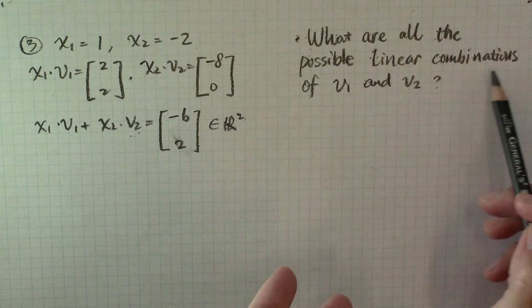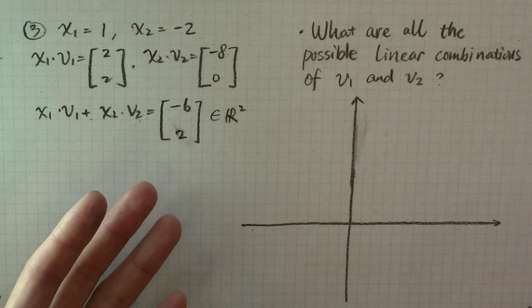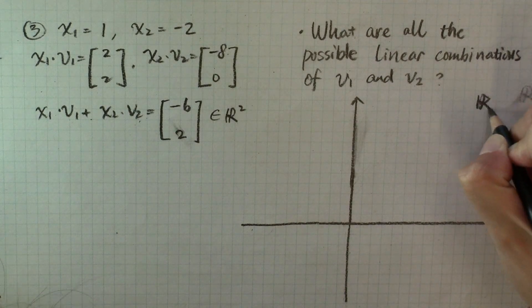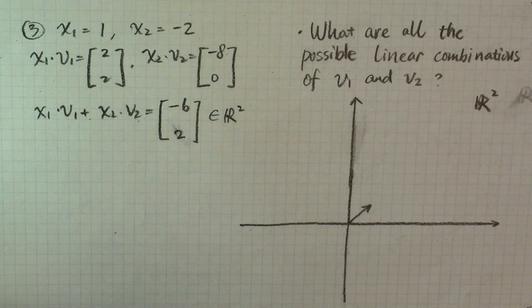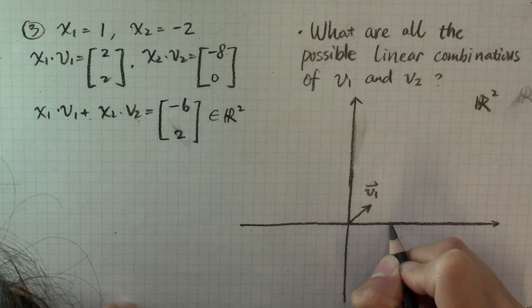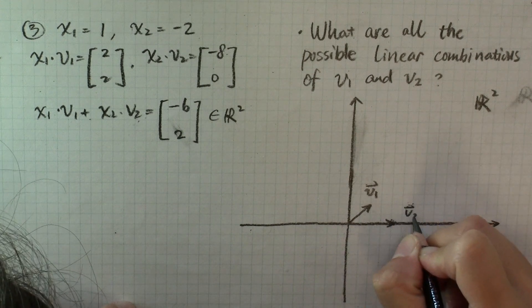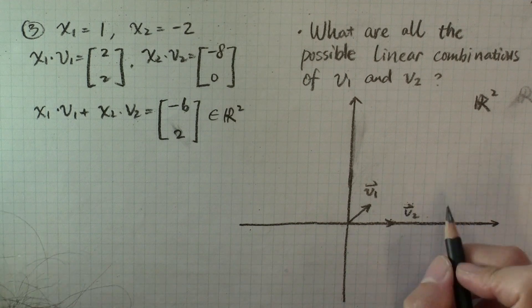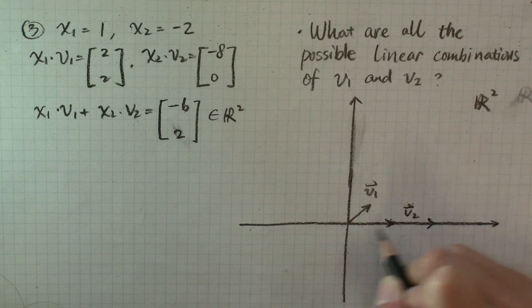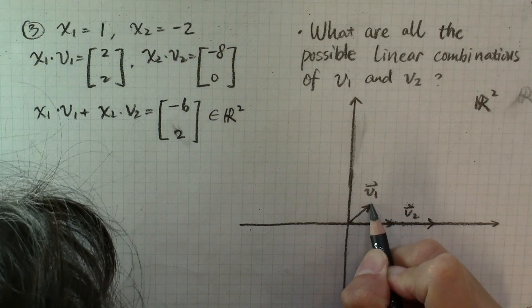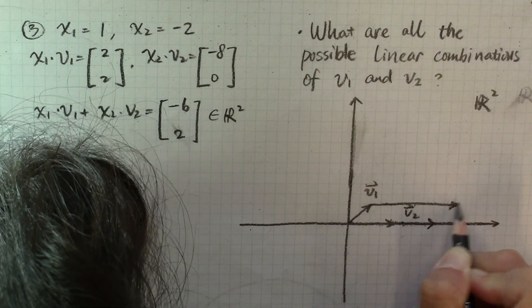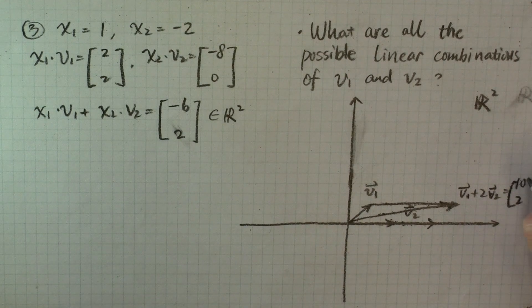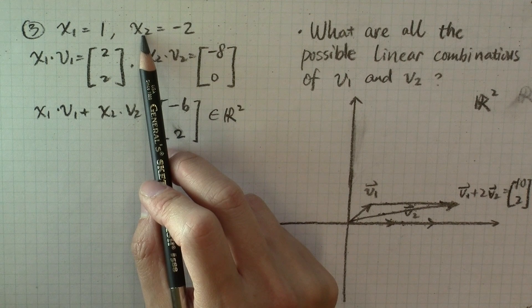So what are all the possible linear combinations of v1 and v2? To answer this, it will be helpful to look at the geometric representations of these vectors. Here's the coordinate plane representing the space R2. Vector v1 is (2, 2), and vector v2 is (4, 0). When x1 is equal to 1 and x2 is equal to 2, we're keeping v1 as it is but stretching v2 to twice its original length. When we add v1 plus 2 times v2, we get the vector (10, 2).